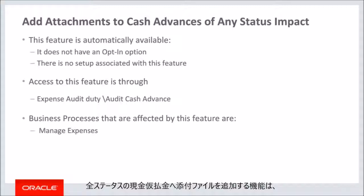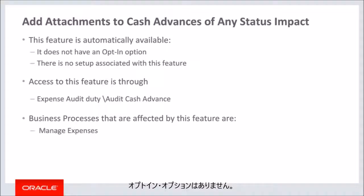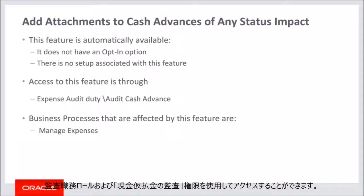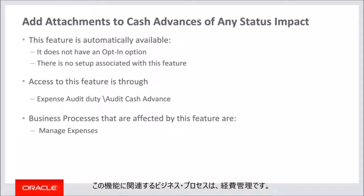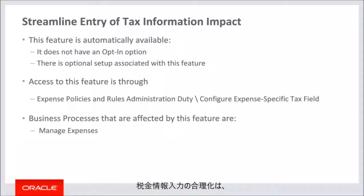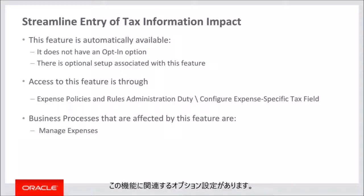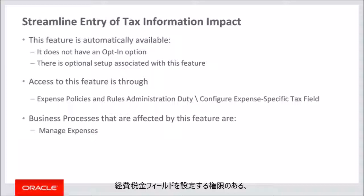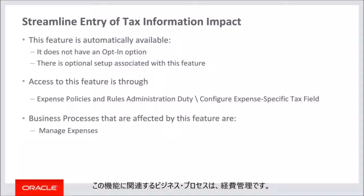Add attachments to cash advances in any status is automatically available after the upgrade and does not have an opt-in option. There is no associated setup. It can be accessed using the audit duty role and privilege audit cash advance. The business process associated with this feature is manage expenses. Streamline entry of tax information is also automatically available after the upgrade with optional associated setup, accessed using expense policies and administration duty role with privilege configure expense specific tax field.